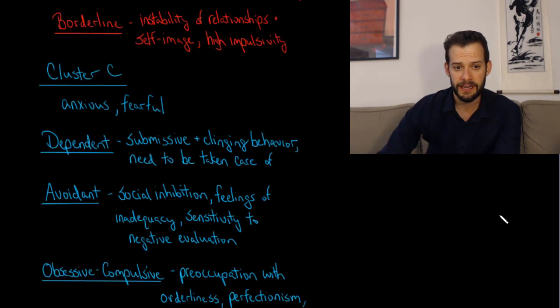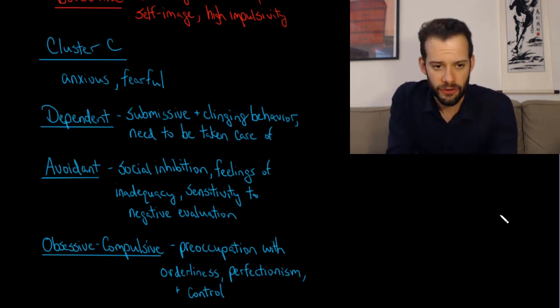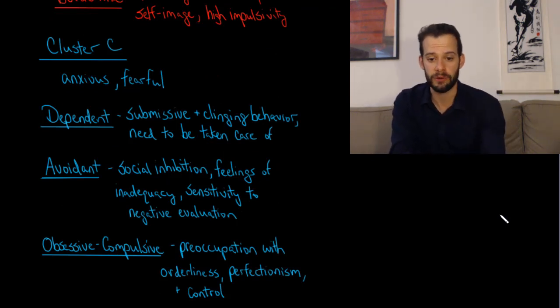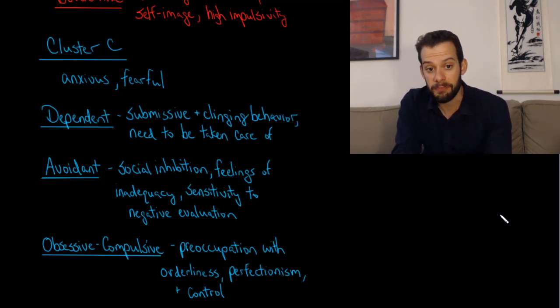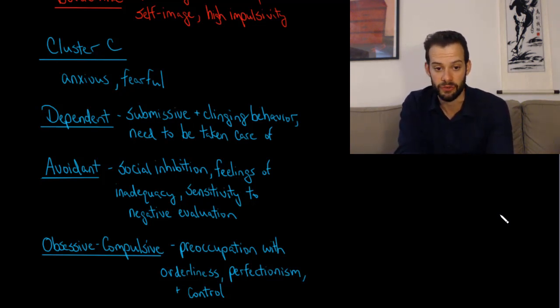Next we have cluster C and this refers to personalities that are seen as anxious or fearful. We have dependent personality disorder and this refers to a person who is overly submissive and shows clinging behavior and a need to be taken care of by others. We have avoidant personality disorder and this refers to social inhibition and feelings of inadequacy and sensitivity to negative evaluations. And lastly we have obsessive-compulsive personality disorder and this refers to a preoccupation with orderliness, perfectionism, and control.